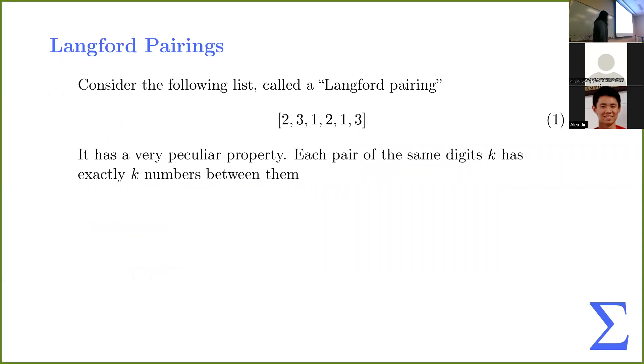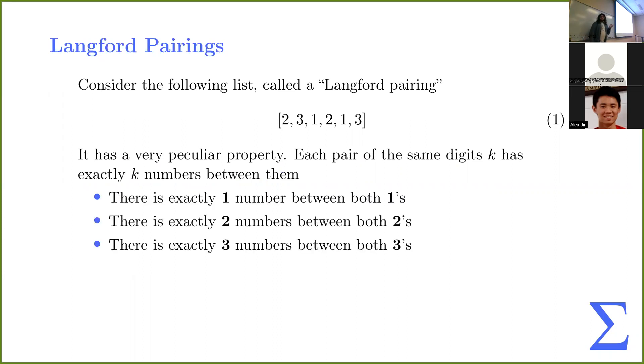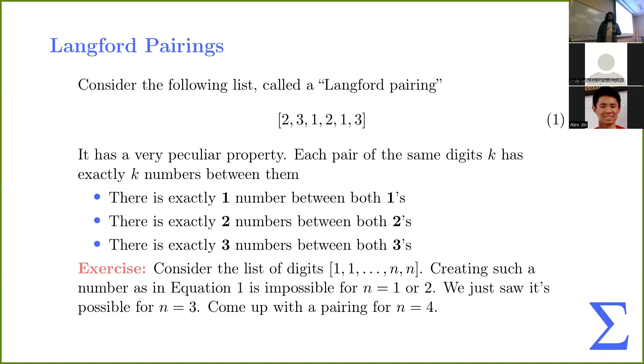So let's look at this list. So we have two twos, two threes, and two ones. If you notice, each pair of digits k has exactly k numbers between them. There's exactly one number between both ones, exactly two numbers between both twos, and exactly three numbers between both threes.